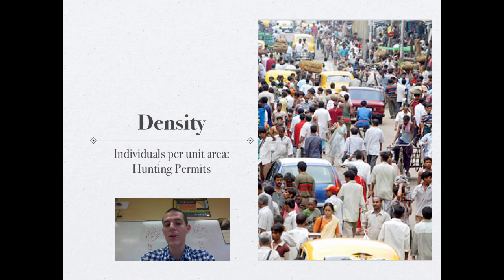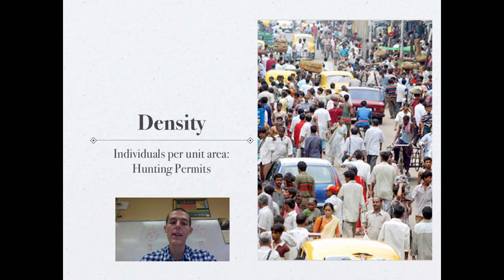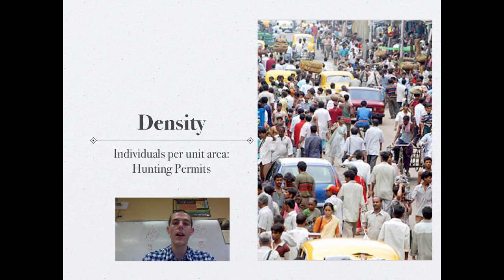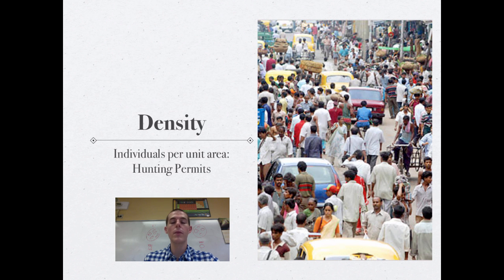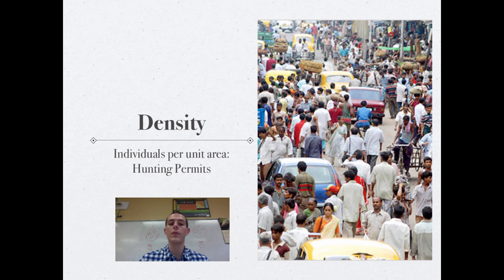One thing scientists can use density information for is to issue hunting permits. Wildlife management officers look at a broad area — a county or a national park — identify where there are dense numbers of animals versus less dense areas, and divide the area into sections. They issue more hunting permits in sections with high density and fewer permits in areas with low density of huntable individuals.